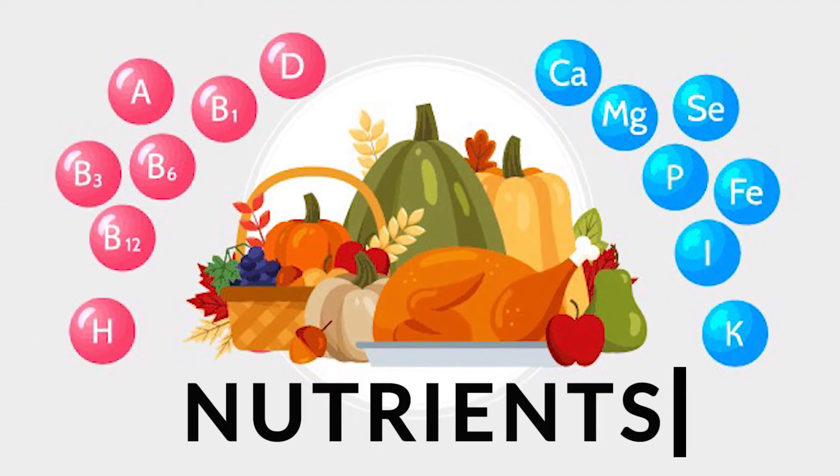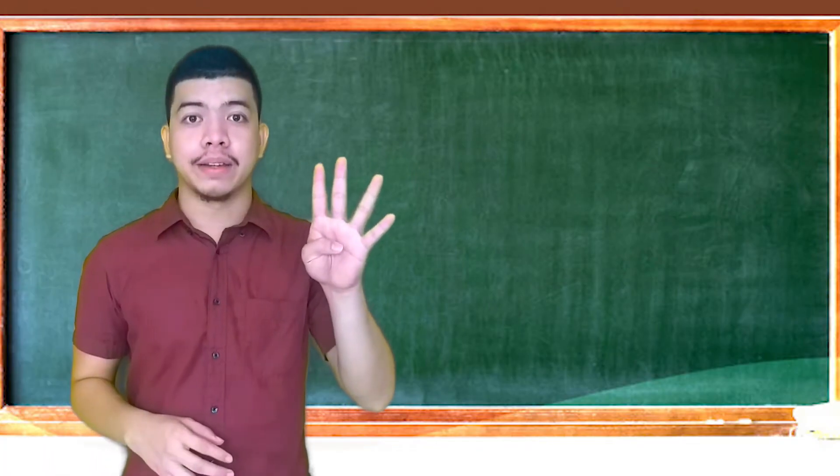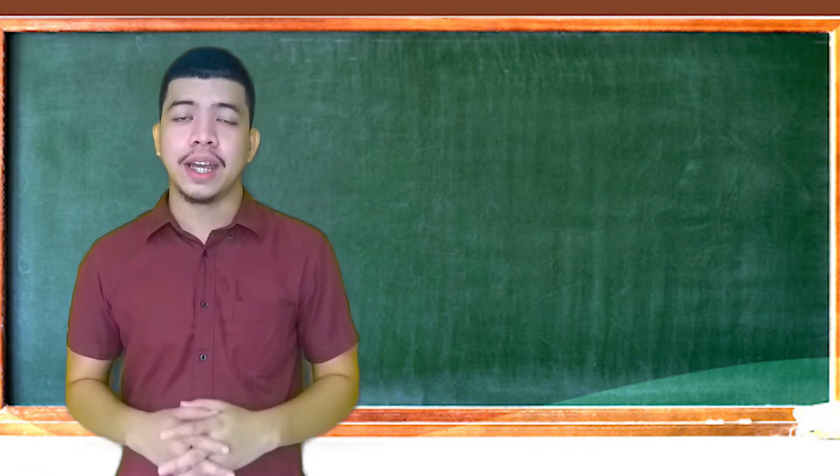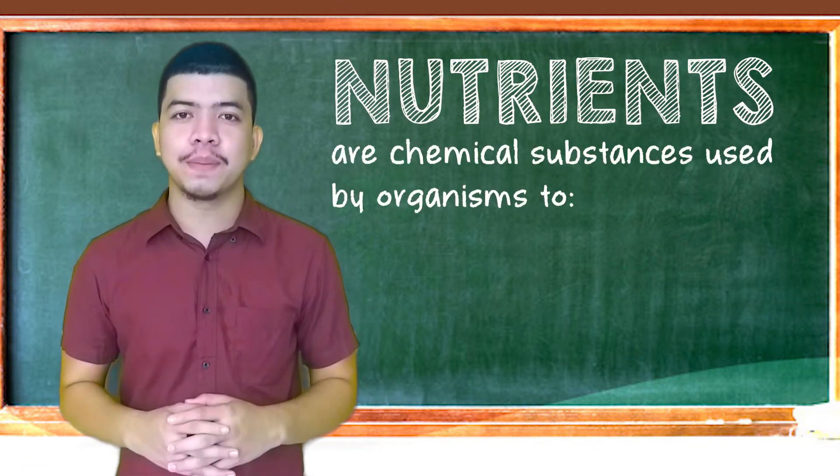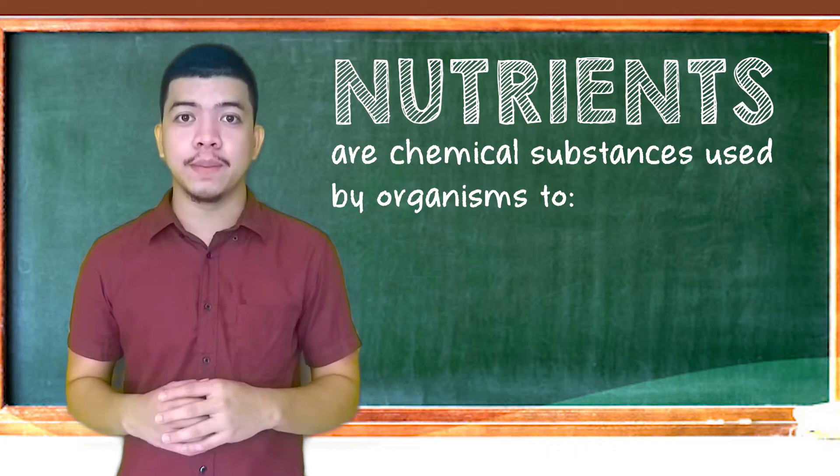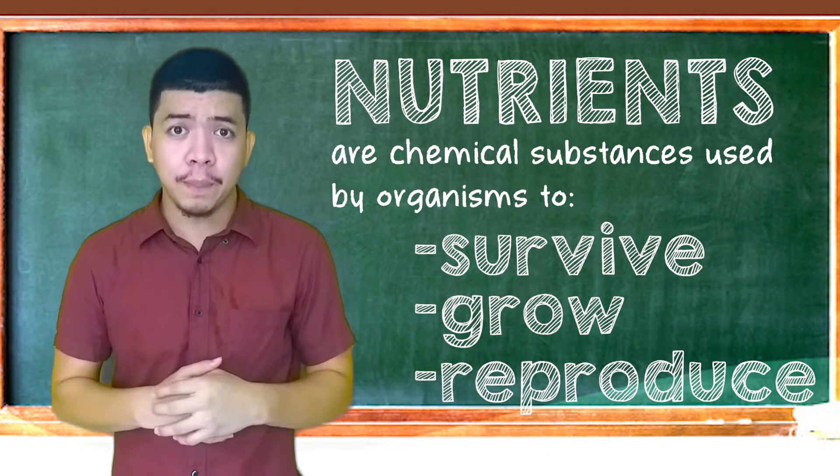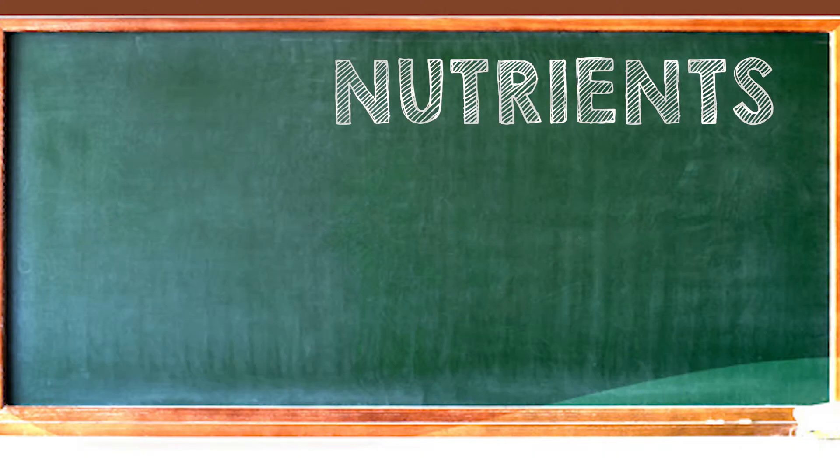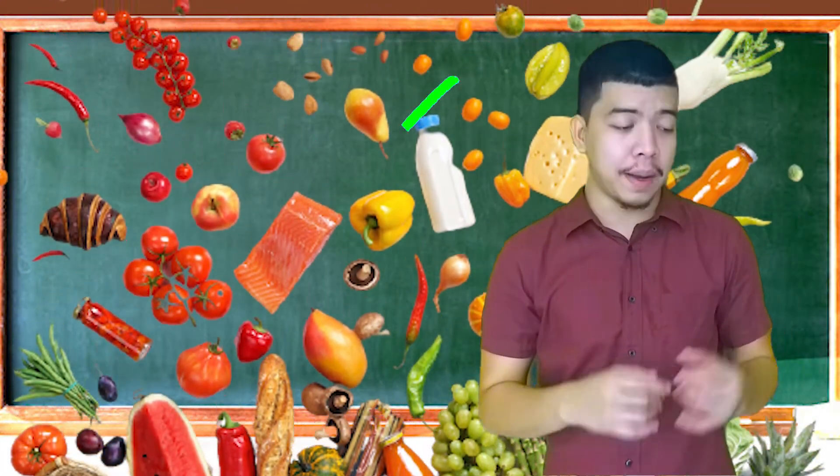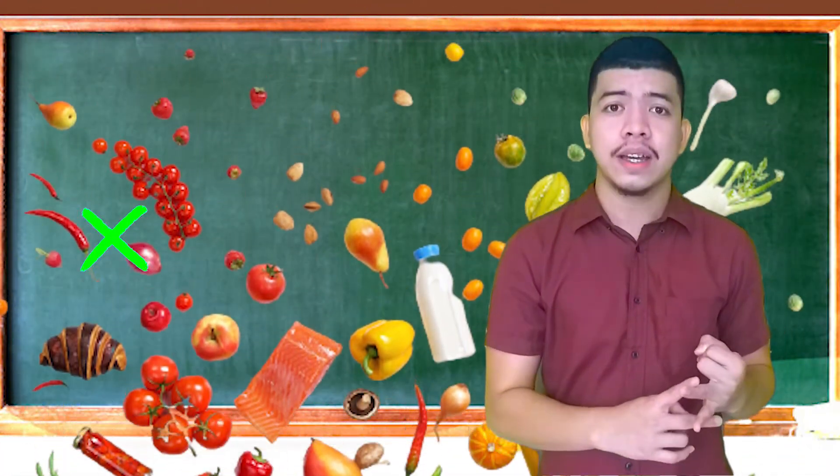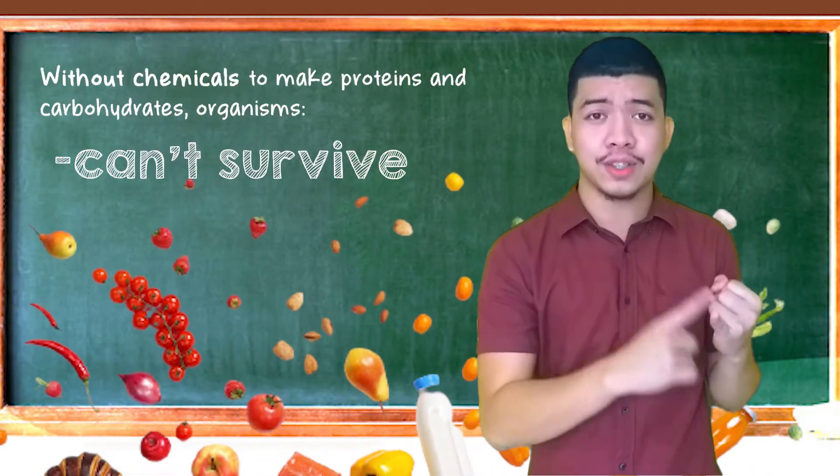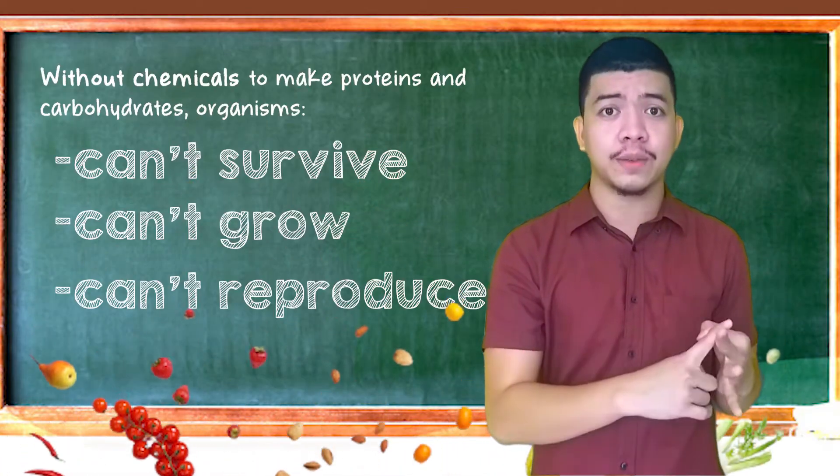Fourth factor: Nutrients. Para sa pang-apat na factor, sabi sa biology, nutrients are chemical substances used by organisms to survive, grow, and reproduce. Just imagine, ano pag walang nutrients? Kapag walang chemicals to make proteins and carbohydrates, syempre yung organisms cannot survive, cannot grow, and cannot reproduce.